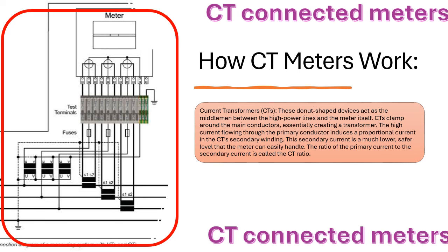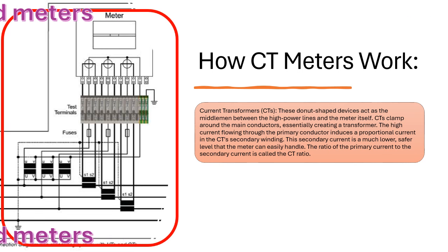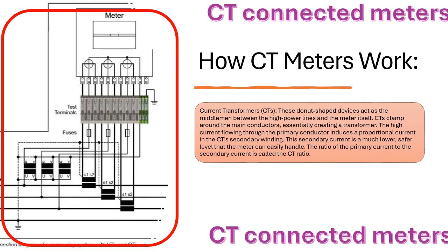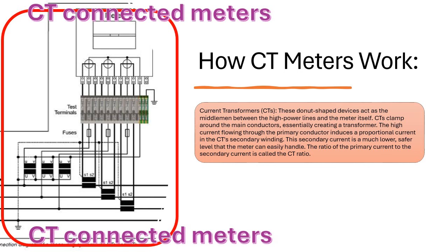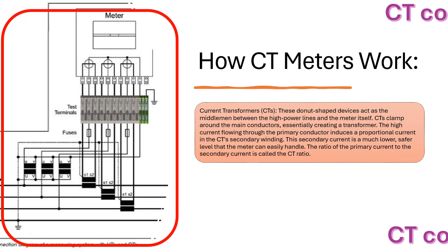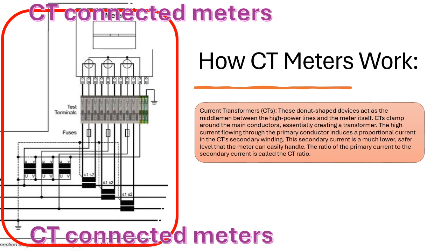The high current flowing through the primary conductor induces a proportional current in the CT's secondary winding. This secondary current is a much lower, safer level that the meter can easily handle. The ratio of the primary current to the secondary current is called the CT ratio.